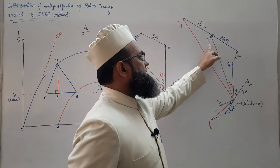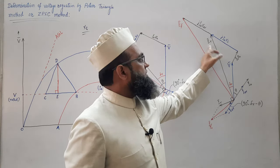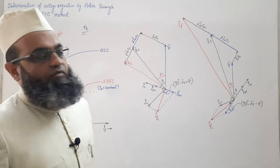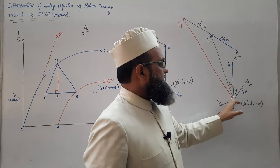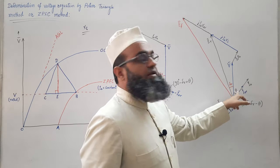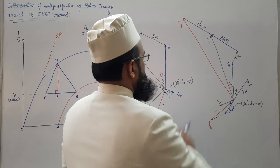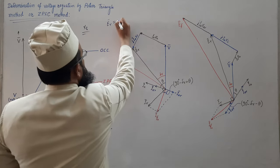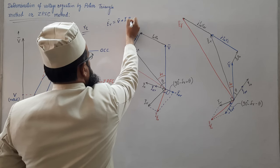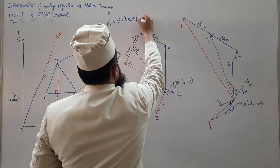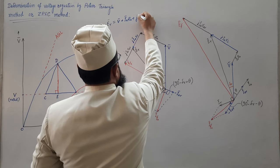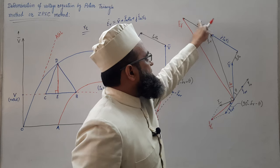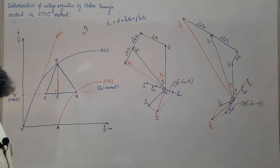Once XL is known, we will evaluate the value of air gap EMF, the resultant EMF ER. This is the phasor diagram for lagging power factor, and this is the phasor diagram for leading power factor. The terminal voltage is V and the armature current IA is lagging at power factor angle theta. We know that ER equals V plus IARA plus j·IAXL.